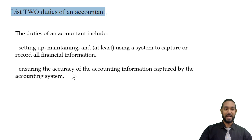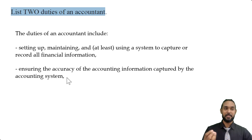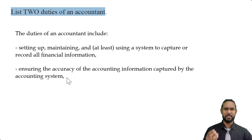Next, ensuring the accuracy of the accounting information captured by the accounting system. It's not just enough to have a system and be able to use it — you have to know that it's working correctly. You don't want to come to the end of the reporting period and have to compile your information for your income statement and balance sheet and realize your balance sheet isn't balancing.